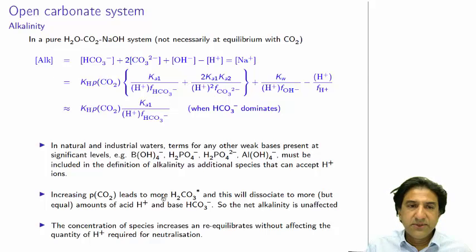Because when you increase the pressure you get H2CO3, then that dissociates to H plus and HCO3 minus. So for every one of the H2CO3s produced, you get a certain amount of HCO3 minus and a compensating amount of H plus. No change in alkalinity. You can see that as the pressure goes up, this H plus will actually compensate that in the denominator. The concentration of the species increases and reequilibrates without affecting the quantity of H plus required for neutralization. In other words, you never reach equilibrium.